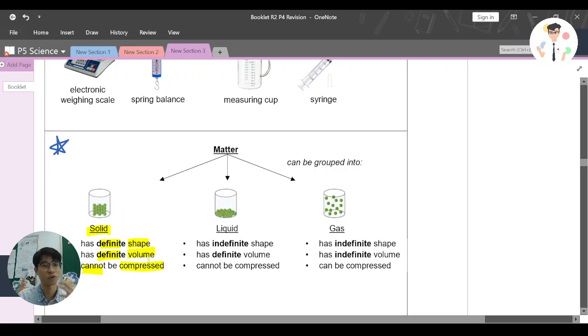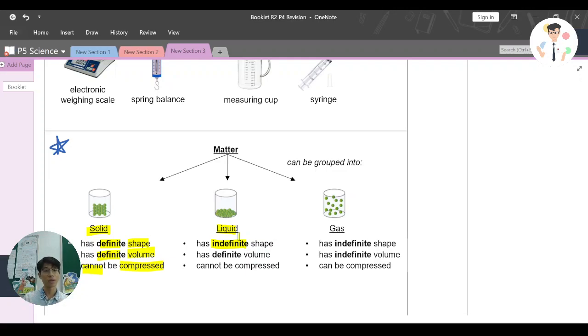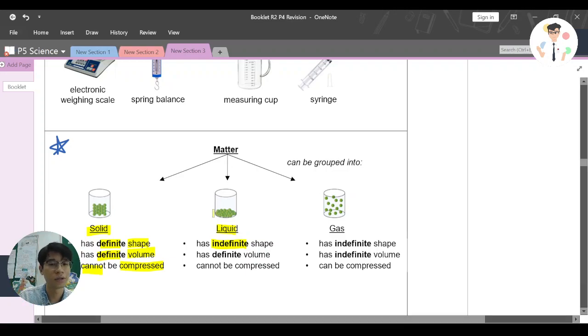Liquid has indefinite shape, means that it will change the shape based on the container. For example, you have a water bottle with water inside. If you do like this, it will just change its shape to fit in the container shape. That's why no definite shape. However, it has a definite volume, and the same thing like solid, it cannot be compressed.